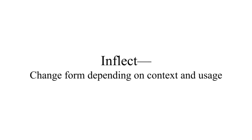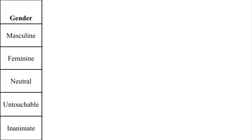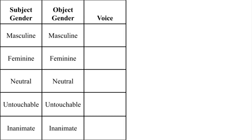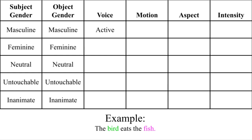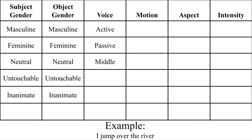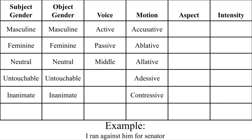Verbs are the only one that inflects, but whoo mama do they inflect. Verbs inflect based on the gender of both the object and subject, the voice, the motion, the aspect, and intensity. That entails active, for when the subject is doing something to the object, passive, for vice versa, middle, for when there is no object. Now, motion is that thing I was talking about before, where jump over is one word. You've got six of these: plain or accusative, ablative, for from or out of, allative, for to or into, adessive, for at or with, contessive, for against, and perissive, for around or through.